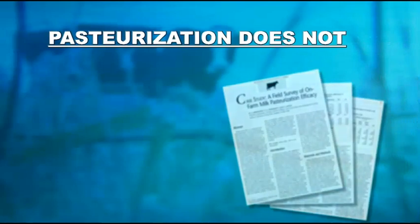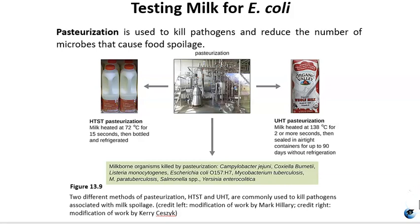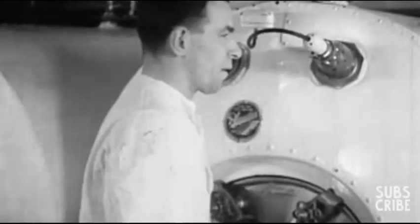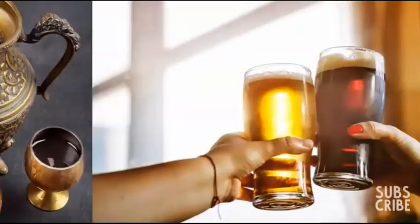Some people believe that drinking raw milk is more nutritious and more easily digested, or that pasteurized milk creates problems like lactose intolerance. However, many studies have shown that pasteurization does not significantly change the nutritional value of dairy products, nor does it cause lactose intolerance or allergic reactions. Drinking raw milk could endanger your health — hundreds of people have gotten sick from drinking raw milk over the past decade. Pasteurization is used to kill pathogens and reduce the number of microbes that cause food spoilage. There are two different methods: HTST and UHT. Since the 1920s, pasteurization has been widely used to increase food safety and extend product shelf life. It removes 99.9% of bacteria from perishable beverages like juice, beer, kosher wine, and of course milk.